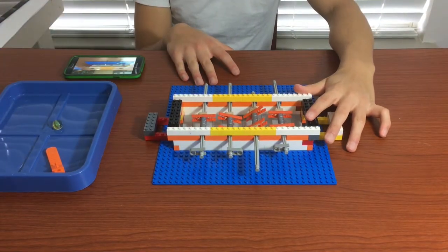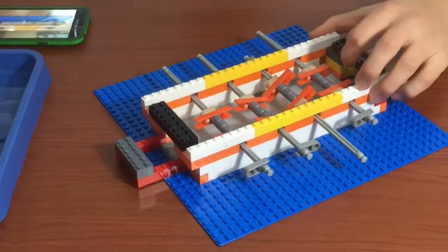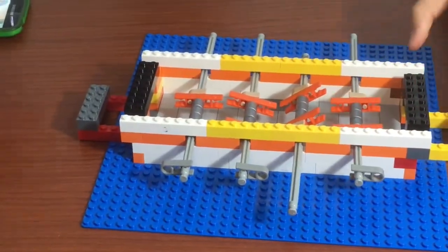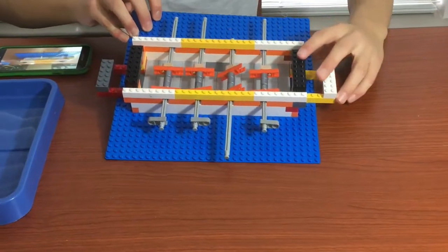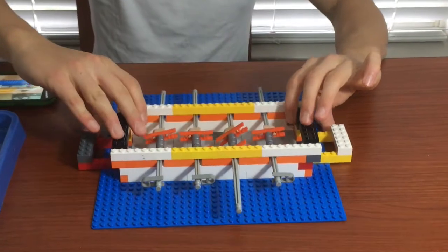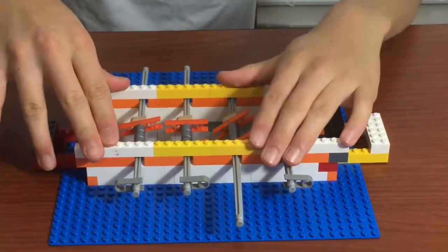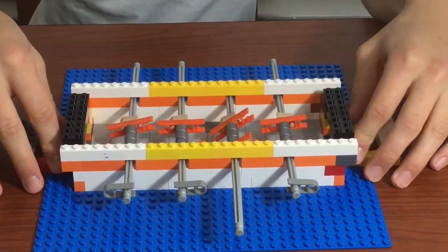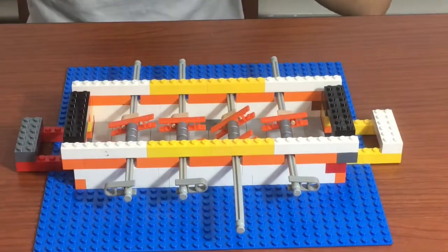Here's the completed foosball table. So this is what it looks like. I'm going to tilt it a bit so y'all can see the view. It's on a flat base plate. It didn't take me too many pieces, about let's say maybe a hundred between a hundred and two hundred pieces, which isn't too much for something this size.